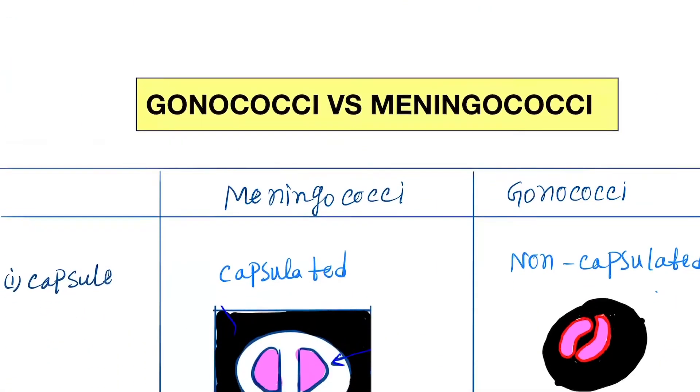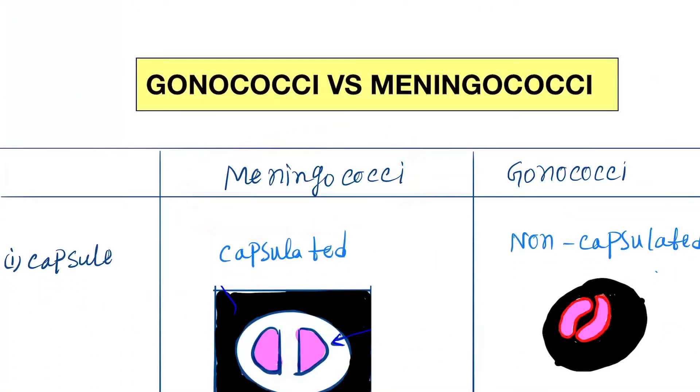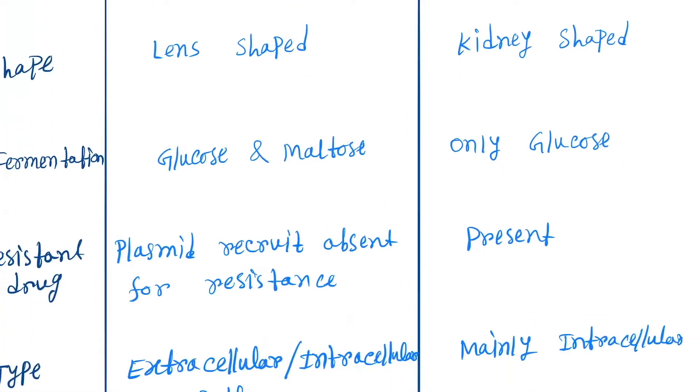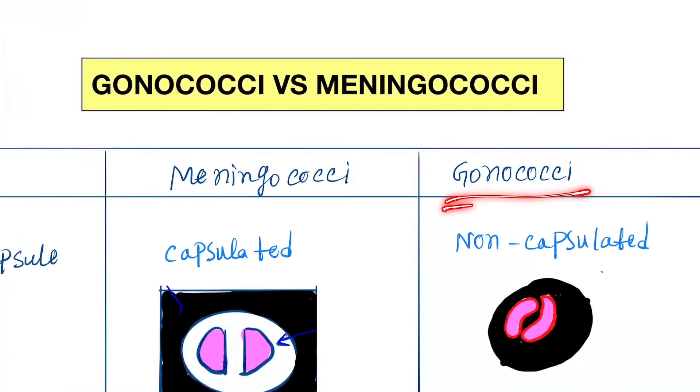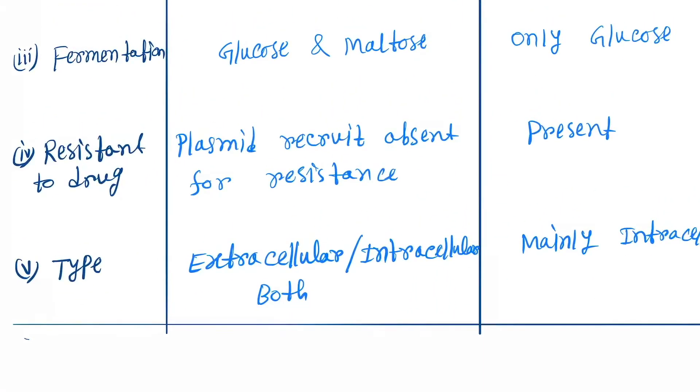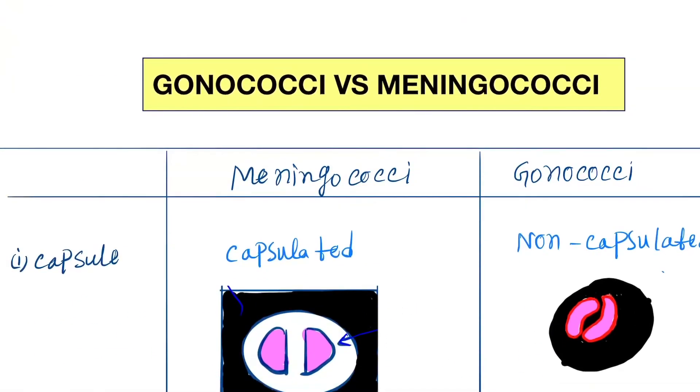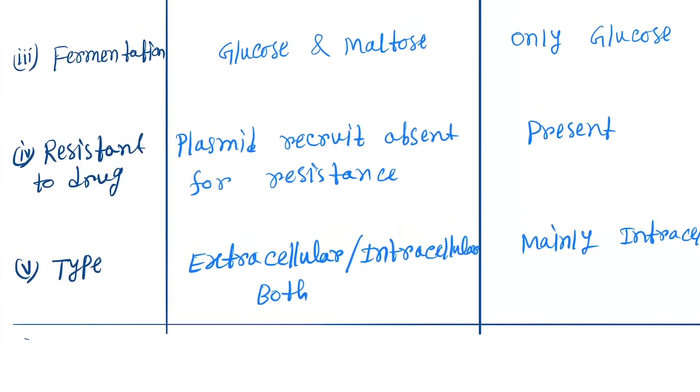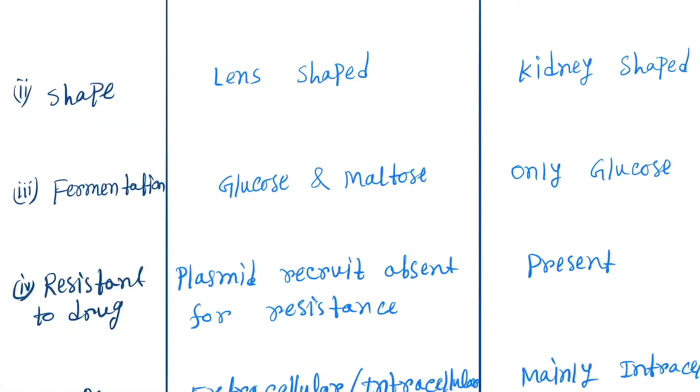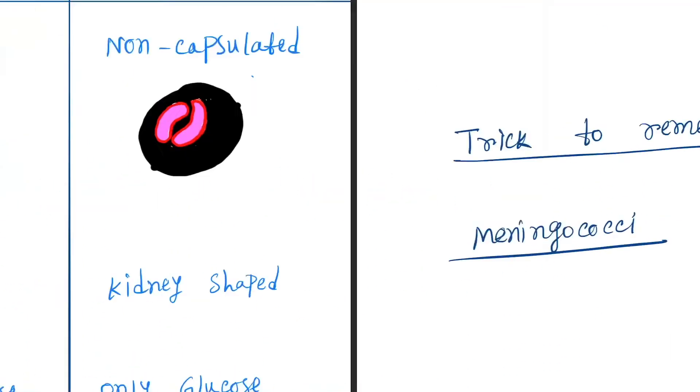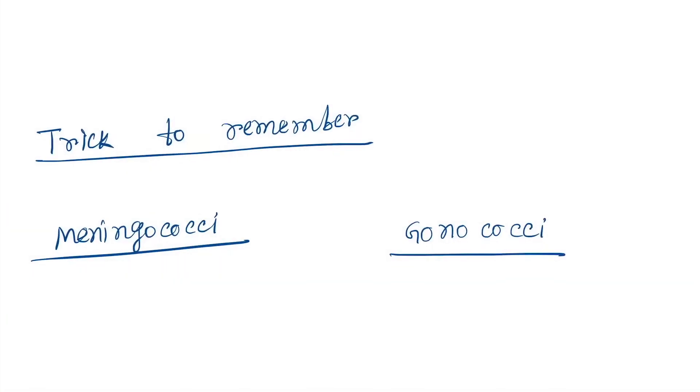In meningococci there is no drug resistance, so less virulent. But gonococci has drug resistance present, so they are more dangerous. Next is type - extracellular or intracellular. Meningococci are both intracellular and extracellular, meaning they can remain in cells and also in blood and other body fluids. Gonococci is mainly intracellular only.